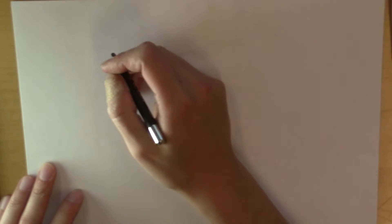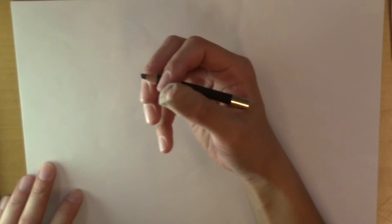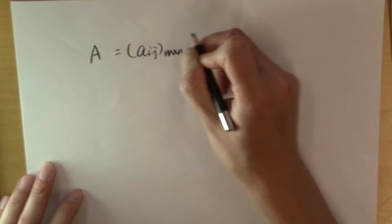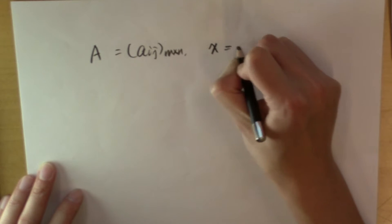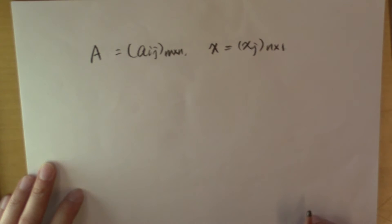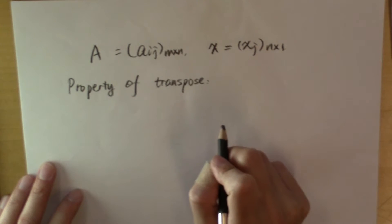Before we talk about this, we need to first introduce a property of transpose. If A is an M by N matrix and X is an N by 1 vector, then there is an important property of the transpose operation.